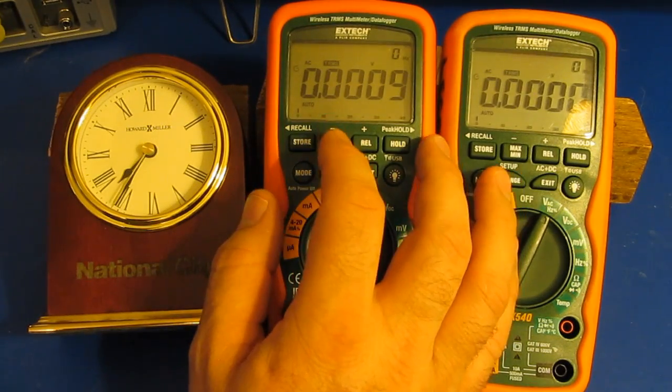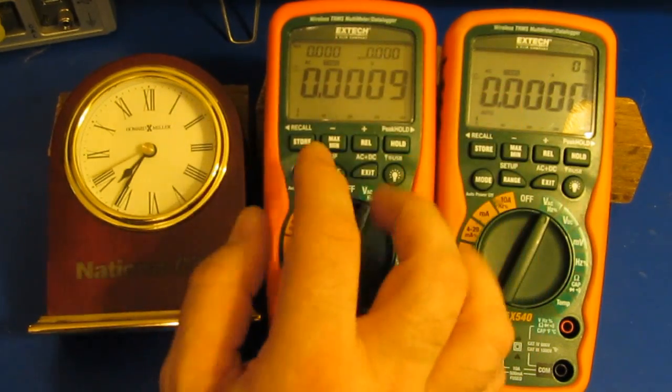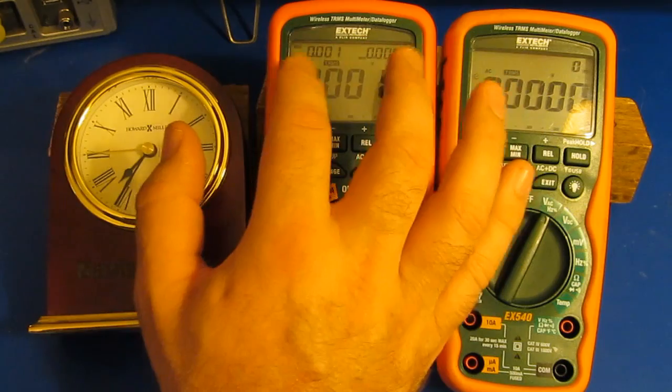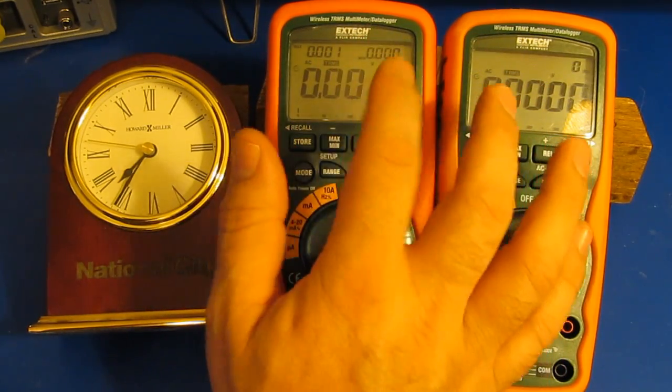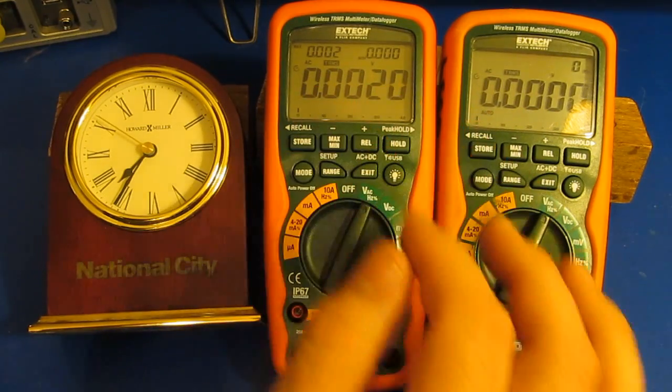One of the nice features with this meter is it's a tri display. You can see I can display the max, the min, and the current value. If I select AC plus DC, I'll get the DC, the AC value, and the AC plus DC. So it's got some nice features that I do like about this meter.